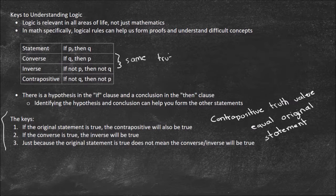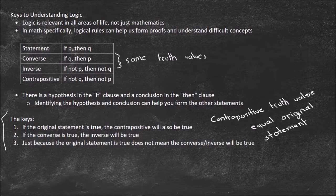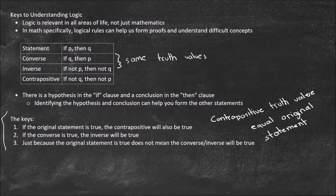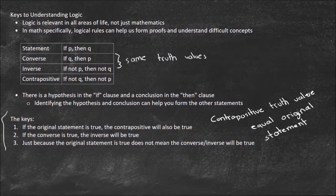The third key is that the original statement and the converse do not have to have the same truth value. Just because the original statement is true does not mean the converse and the inverse will be true. In our first example from the last video, the converse and inverse were false, but the original and the contrapositive were true.